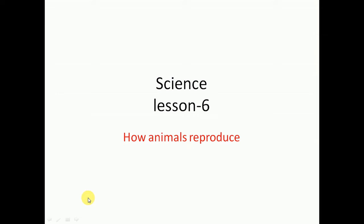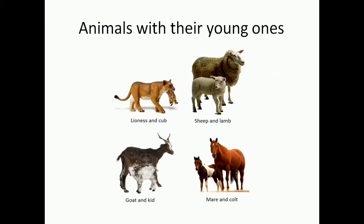Hello children, today we are going to discuss chapter number 6 — how animals reproduce. So basically, it means how animals give birth to their young ones and life goes on.